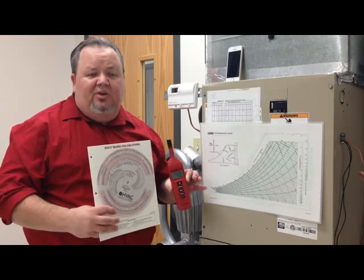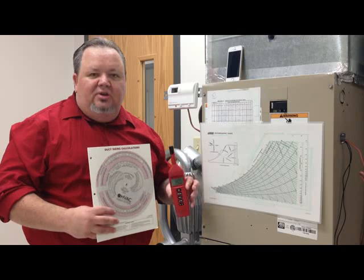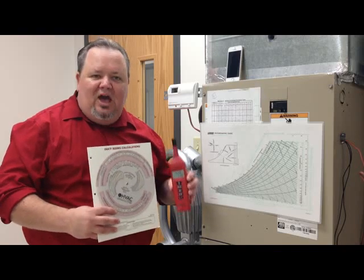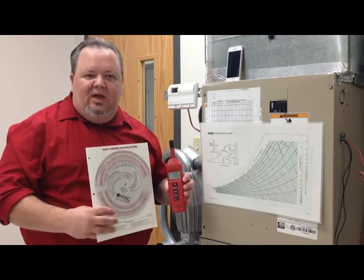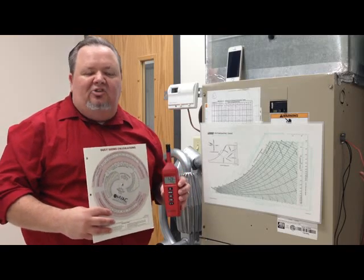For example, with some knowledge of psychrometrics, we can perform the total heat test. The total heat test allows us to know exactly how much heat an air conditioning system is absorbing from the house and then rejecting outside, or how well it's actually working.